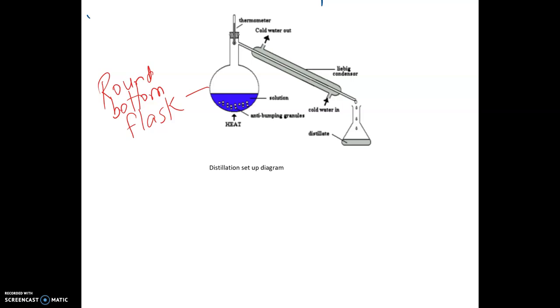You clamp it using clamp stands. Then you have a thermometer to make sure you're only heating up to certain temperature and you know when your first fraction should be coming through. This here is called a condenser.